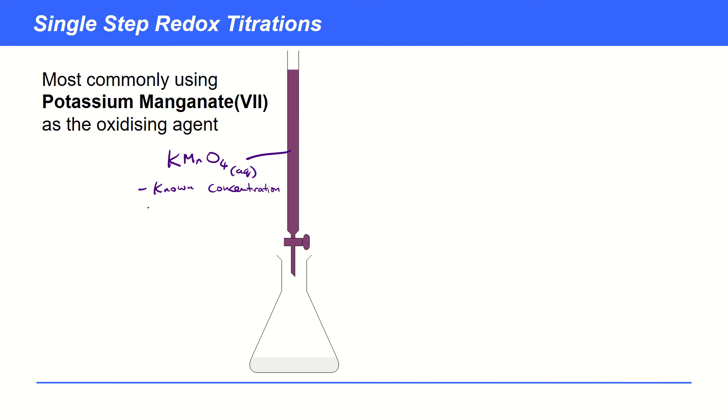And then we find out that that would give us the volume needed to react with this other substance down here, which is known as the analyte, something like Fe2+, for example.